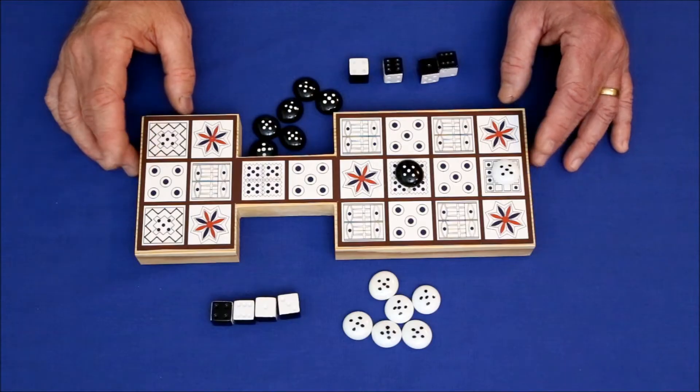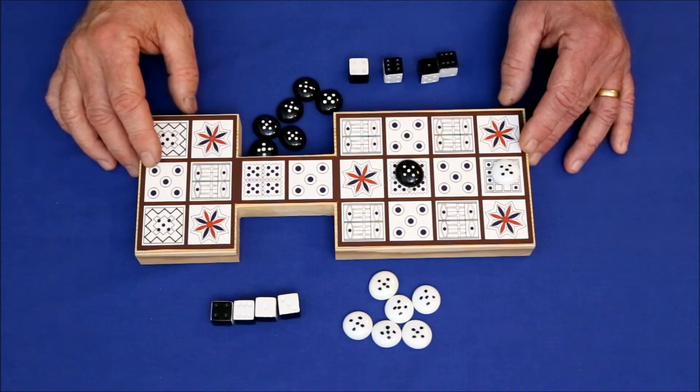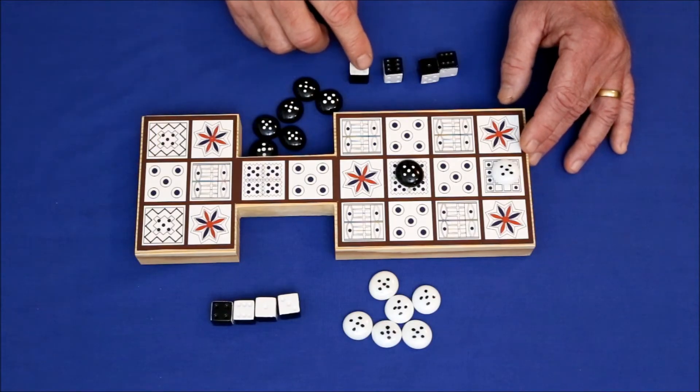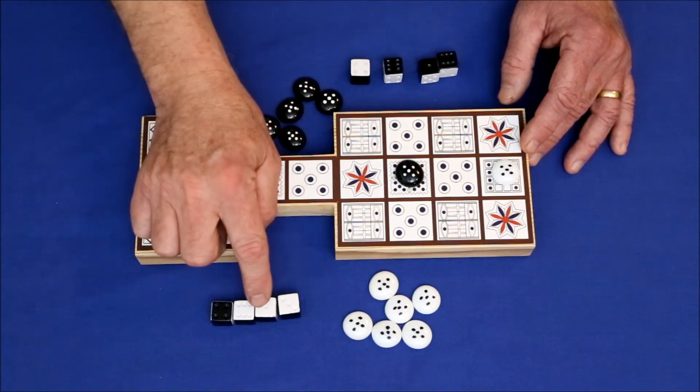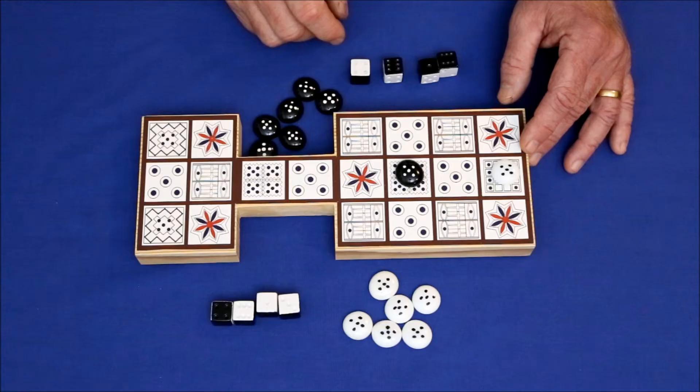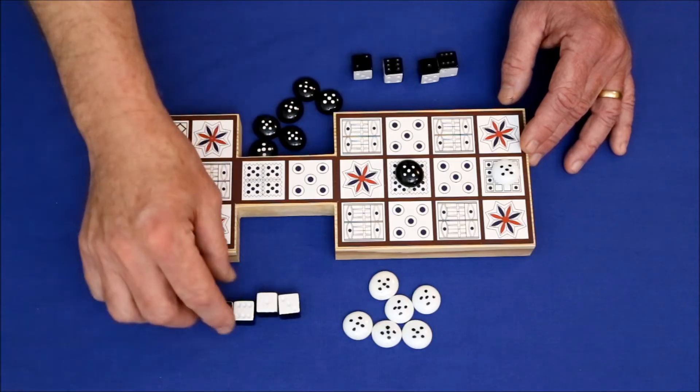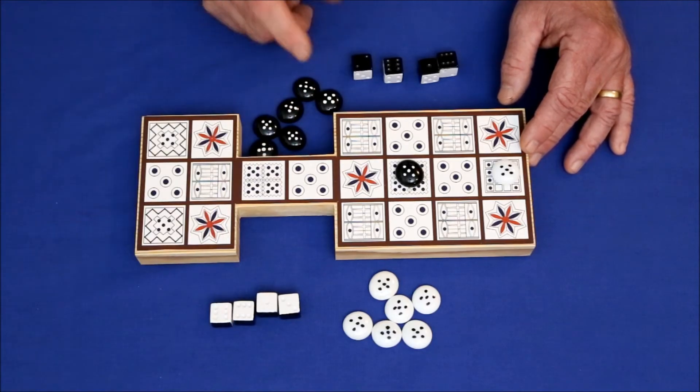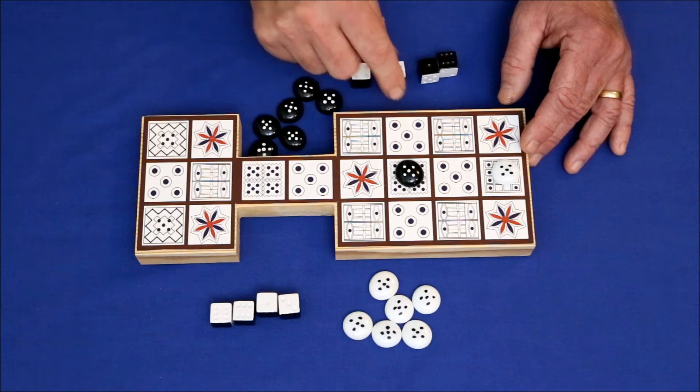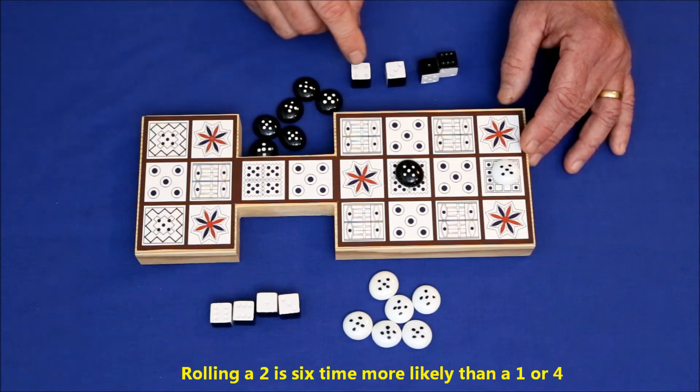Well, almost. Here's where the business of using binary dice makes sense. Statistically, throwing a one or a three is four times more likely than throwing a zero or a four. More importantly, twos are six times more likely than either of those two options.